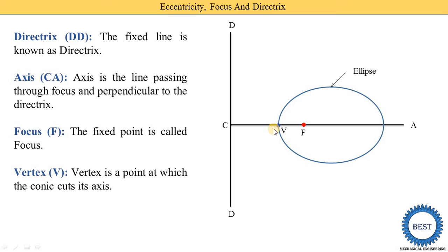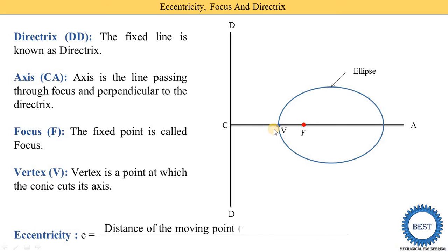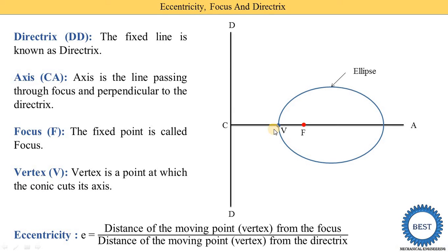These two points — focus and vertex — are very important to define eccentricity. Eccentricity is denoted by E and it is a ratio of distances. The eccentricity E is the ratio of the distance of the moving point (vertex V) from the focus, which is V to F, divided by the distance of the moving point from the directrix, which is V to C. So E = VF / VC.